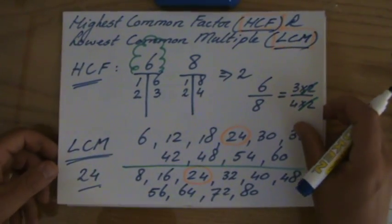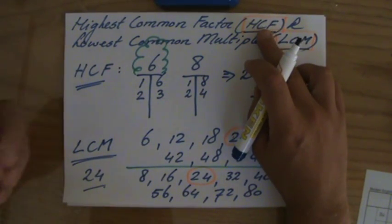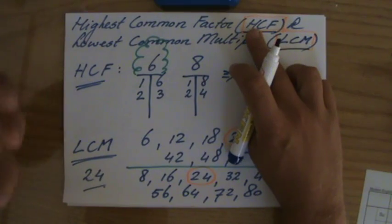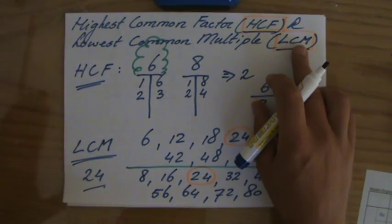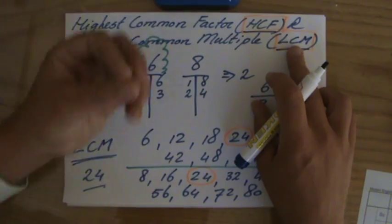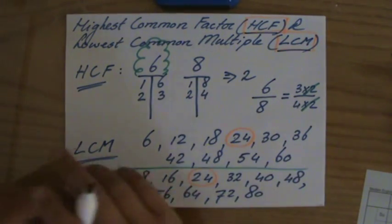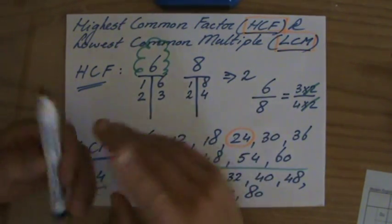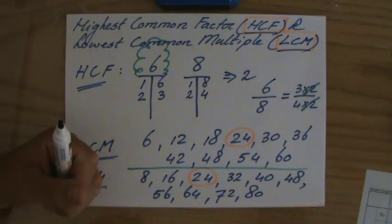So to recap: the highest common factor — which factor do they both have in common, and then the highest one. The lowest common multiple — which multiples do they both have, but then the lowest one. In the next video I'll give you a few more examples, but this is the theory behind it. All the best.